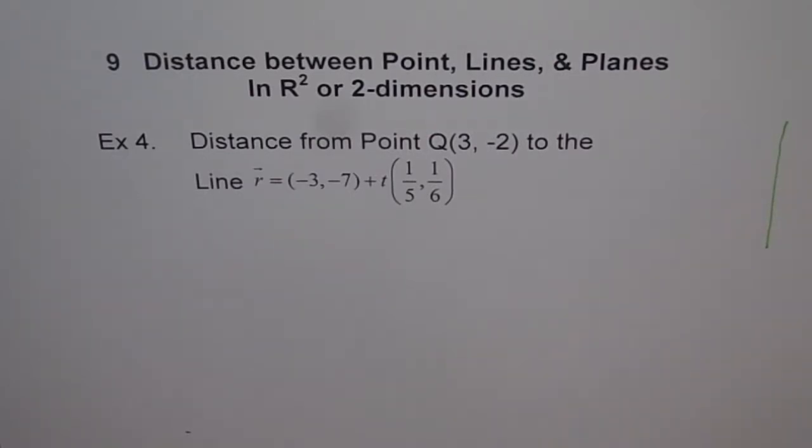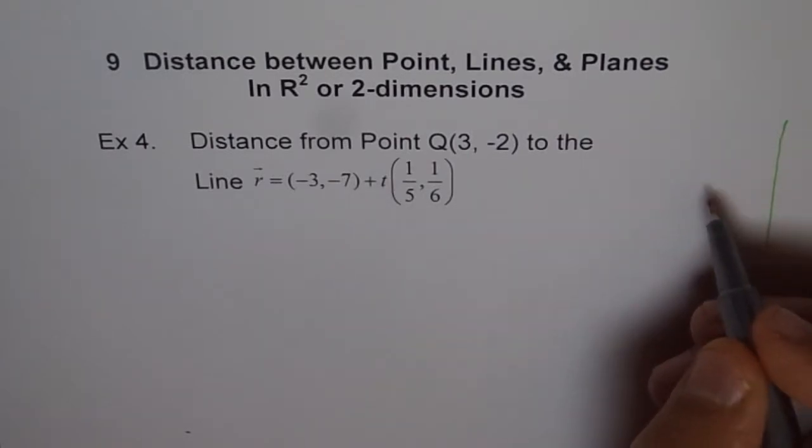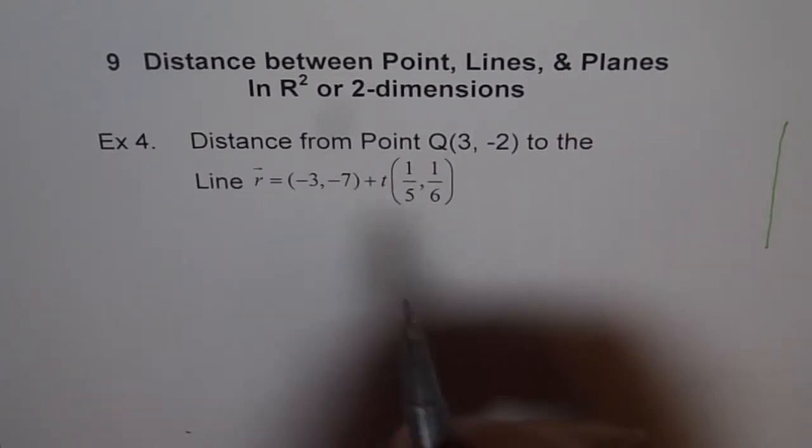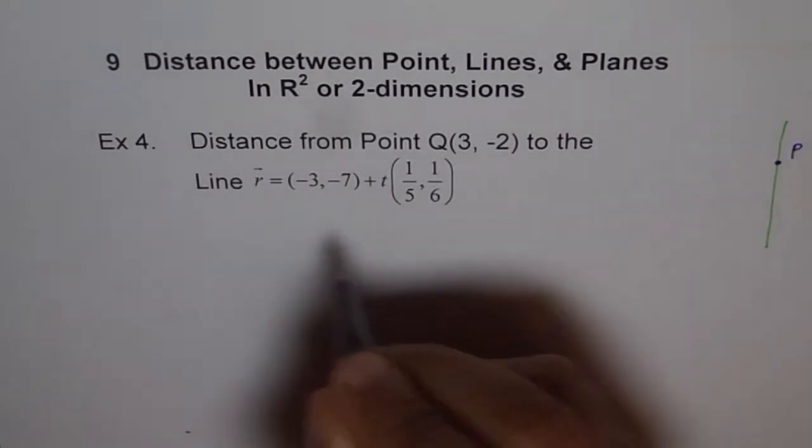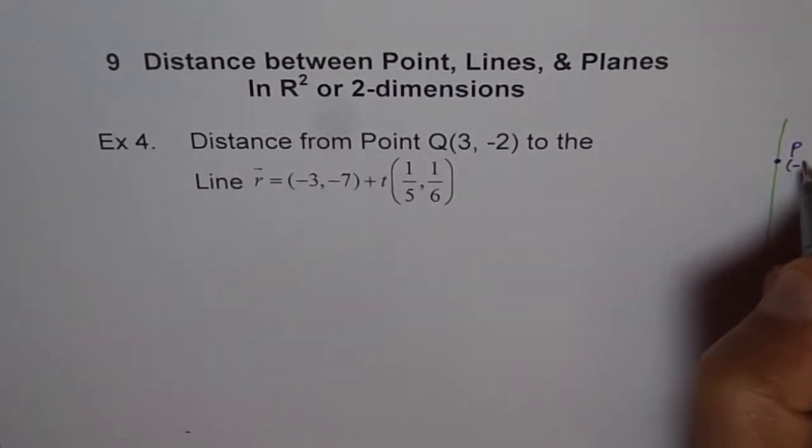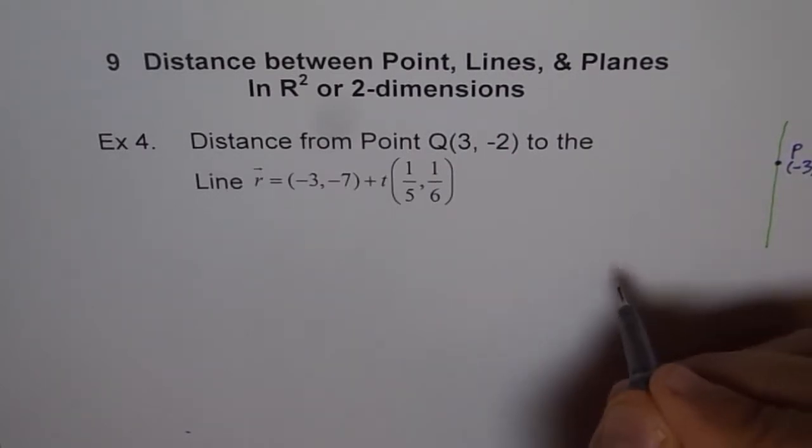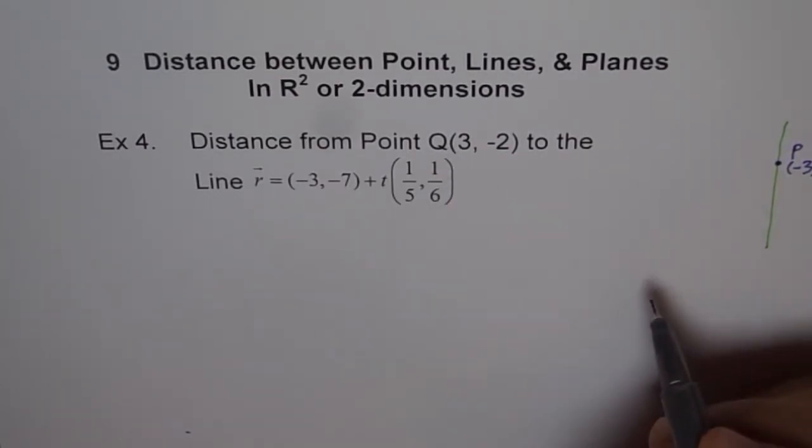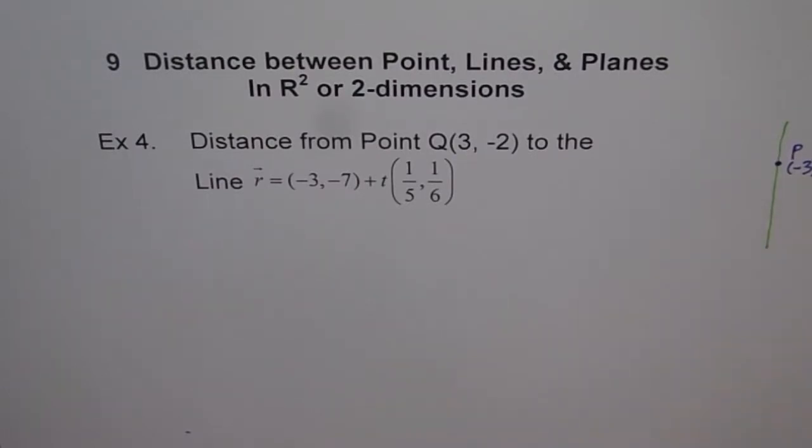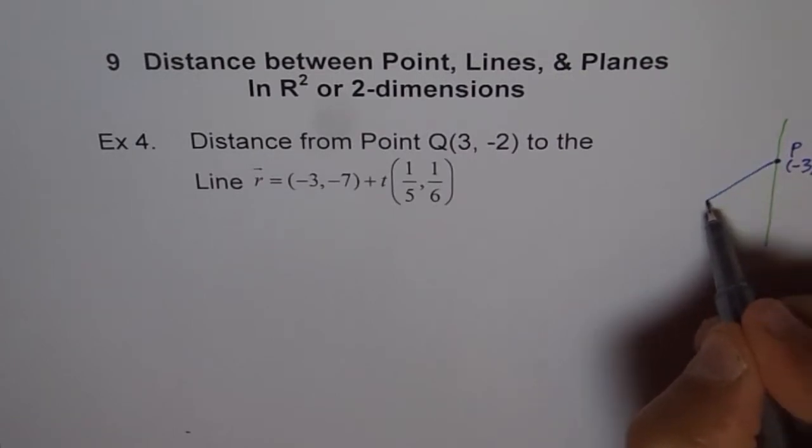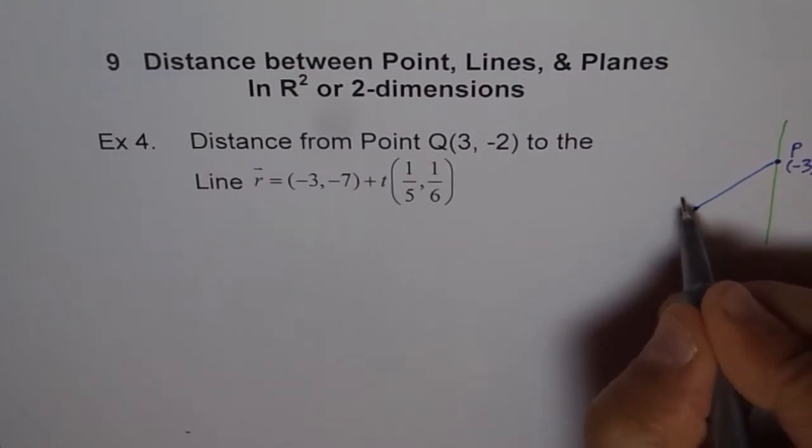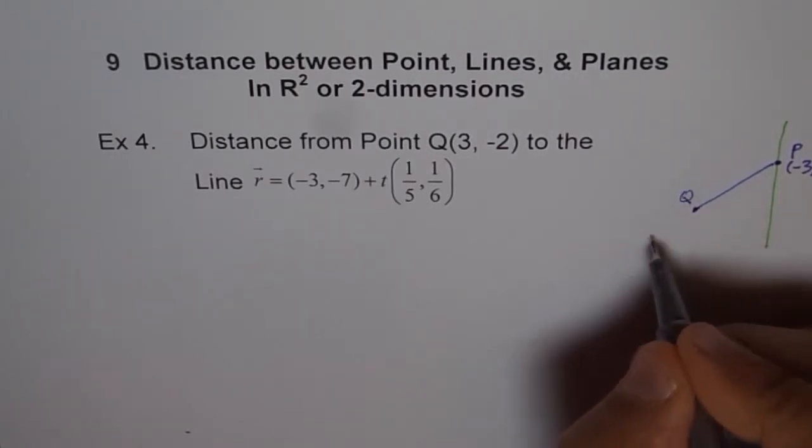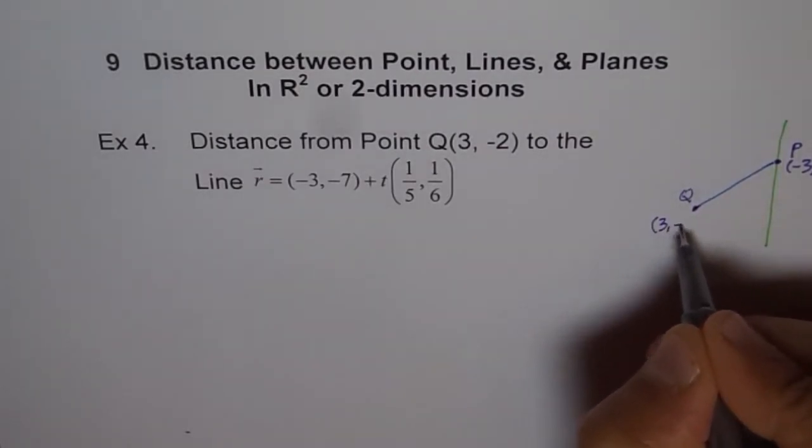We'll consider the point P and Q. P in this case is the point given to us in the line equation, and the point given here is (-3, -7). Q is the point from where we need to find the distance. Let's assume that this point Q is somewhere here. So this point Q for us is (3, -2).